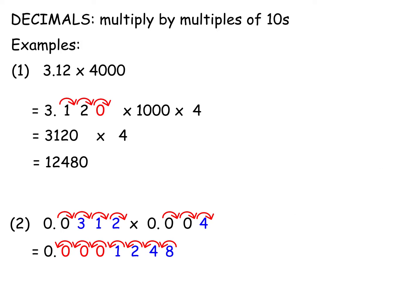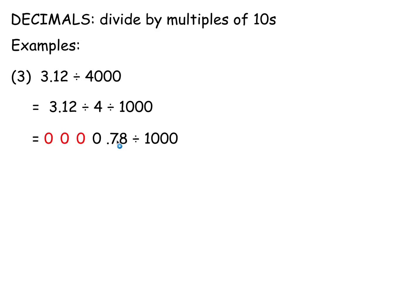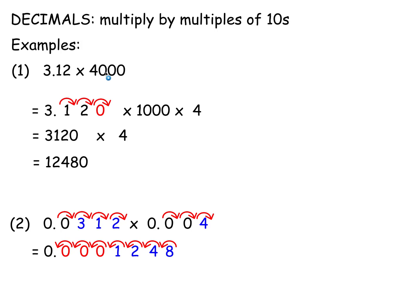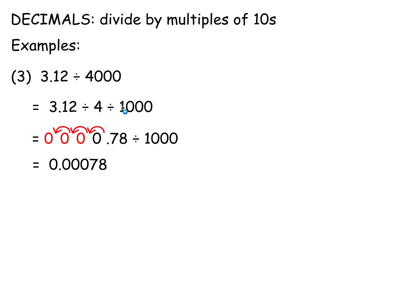For division, divide by 4 first and then by 1,000. So if you divide 3.12 by 4, you get 0.78, then divide that by 1,000 — shift the point 3 places — and there's the answer. To divide by 4,000: divide by the 4 first, then the 1,000. Notice that when multiplying you multiply by the 1,000 first and then the 4, but here you do the 4 first then the 1,000 — simply because it's easier.